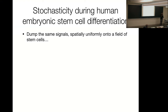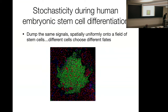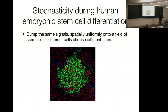You're dumping signals that make cells become the inside of you. The picture shows a whole bunch of cell types — all kinds of stuff happens. So even though the spatial profile of the signal is completely uniform, you've dumped a large amount of signal on the setup, yet you get all kinds of cell types.